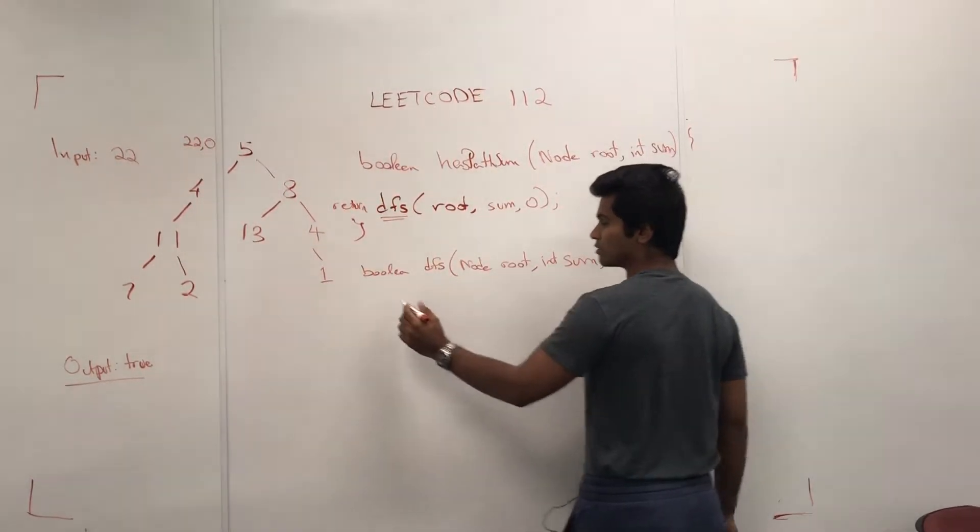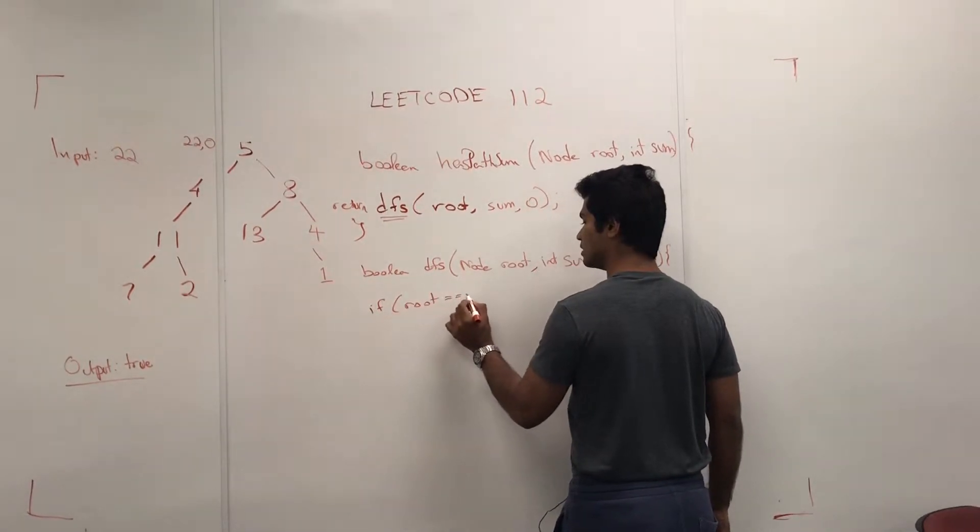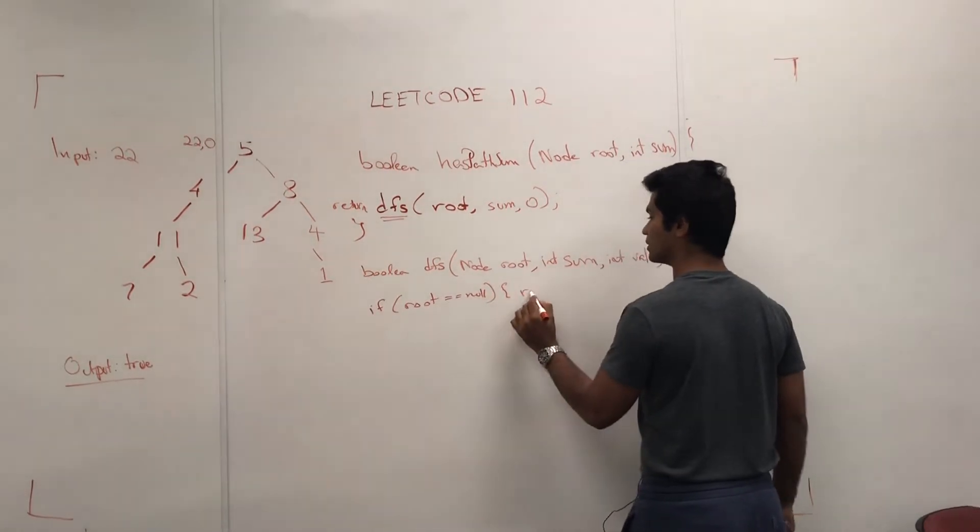So always with these recursive things, if the root is null, we should return, and if our return type is a Boolean in this case, we return false.